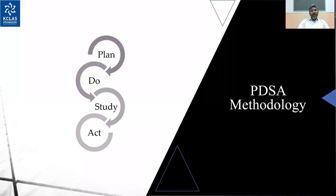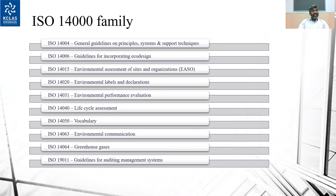This is the model in which EMS is implemented. You will plan and spend a lot of time in planning. You will do the implementation. After implementation, you study where you went right and where you went wrong, then you act accordingly. If something is wrong, you plan and immediately patch it up, taking it forward. This is the ISO 14000 family.